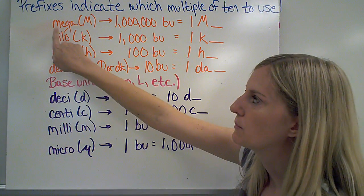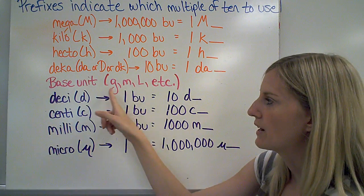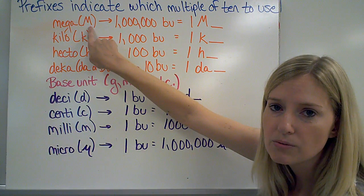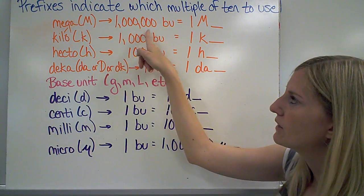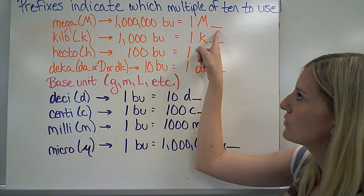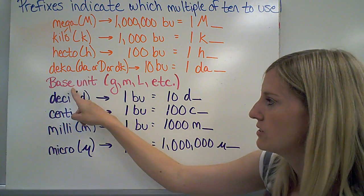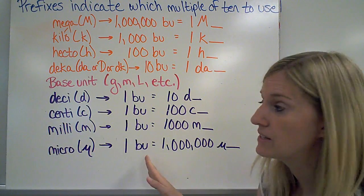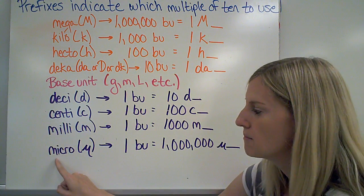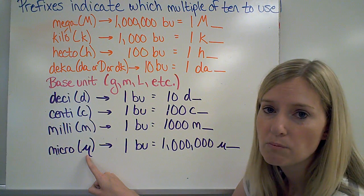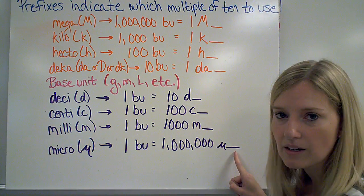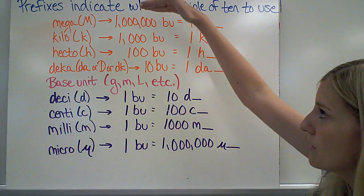Above the base unit, I have units that indicate I'm using something larger than a base unit. Below it, I have prefixes that indicate something smaller. For example, mega is the prefix I put in front of gram, meter, or liter — represented by a capital M — meaning one megagram equals one million grams. On the opposite end, micro is represented by the Greek symbol mu. One gram equals one million micrograms — very, very small units up to very, very large units.